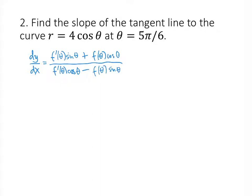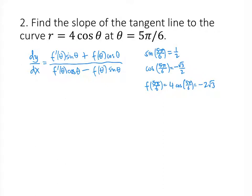Let's go off to the side and figure out what all these values are. Sine of 5pi over 6 is 1/2. Cosine of 5pi over 6 is minus square root of 3 over 2. Now our function: f of 5pi over 6 is 4 times cosine of 5pi over 6, so that's going to be negative 2 times square root of 3. My formula for f prime of theta — if my formula is 4 cosine theta, then my derivative is going to be negative 4 sine theta. So f prime of 5pi over 6 is negative 4 times 1/2, which is just negative 2.